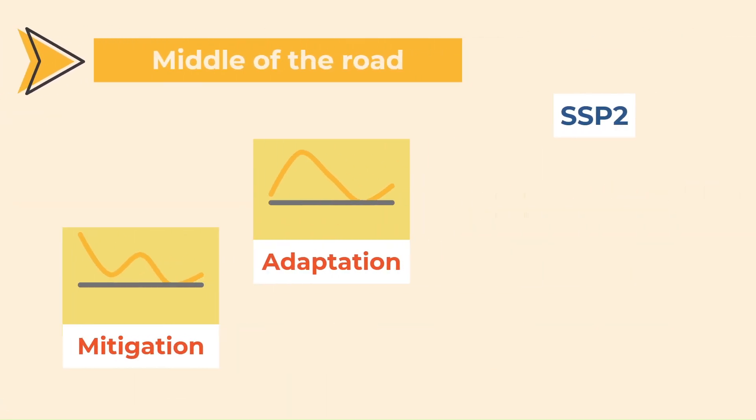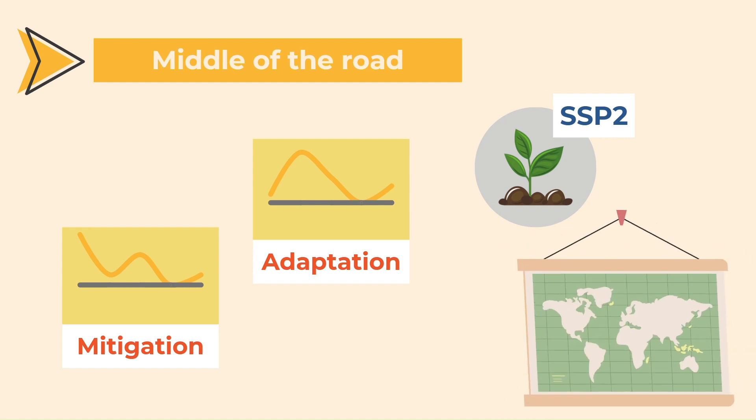SSP2, or middle of the road, has medium challenges to mitigation and adaptation. Societies are moving towards a model that respects the planet too slowly, so that some countries are doing better than others.